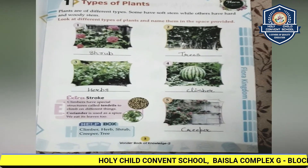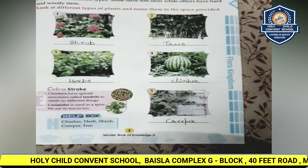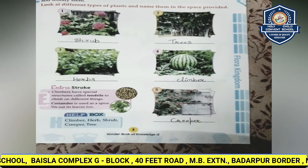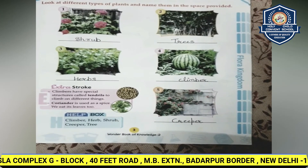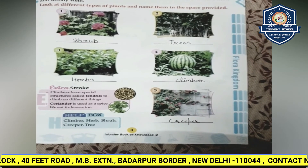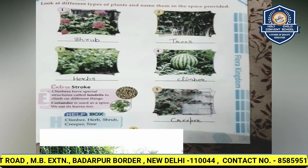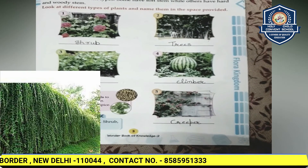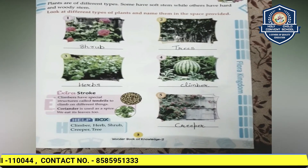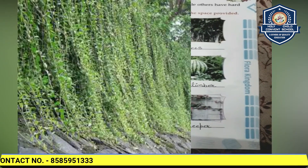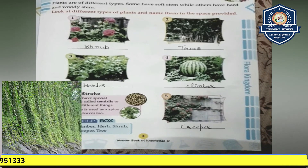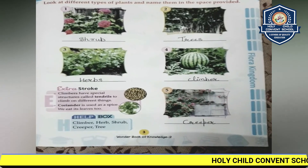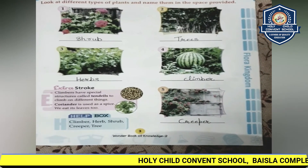Now let us study about the last type of plant — creepers. Creepers are plants with very weak stems that grow along the ground, around another plant, or up a wall by means of extended stems that can neither stand erect nor support all of their weight. They have soft stems and need support — a wall, ground, or another plant — to grow.